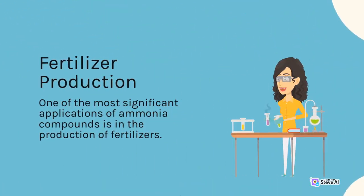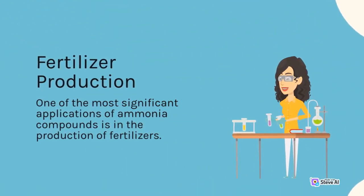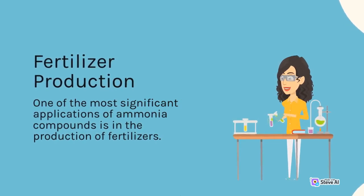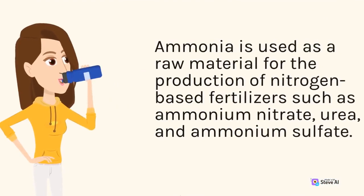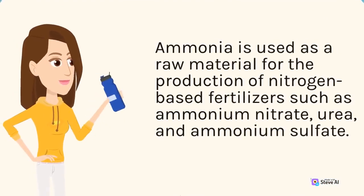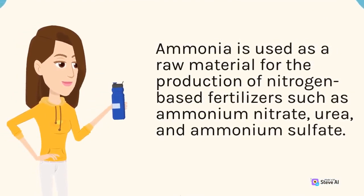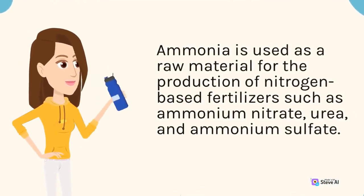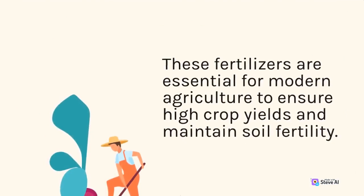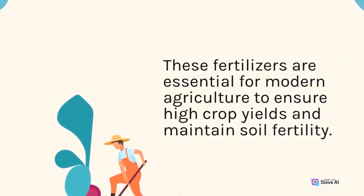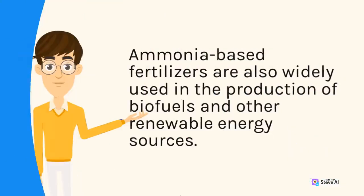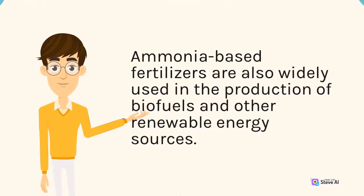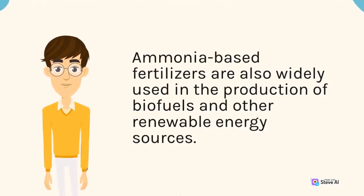One of the most significant applications of ammonia compounds is in the production of fertilizers. Ammonia is used as a raw material for the production of nitrogen-based fertilizers such as ammonium nitrate, urea, and ammonium sulfate. These fertilizers are essential for modern agriculture to ensure high crop yields and maintain soil fertility. Ammonia-based fertilizers are also widely used in the production of biofuels and other renewable energy sources.